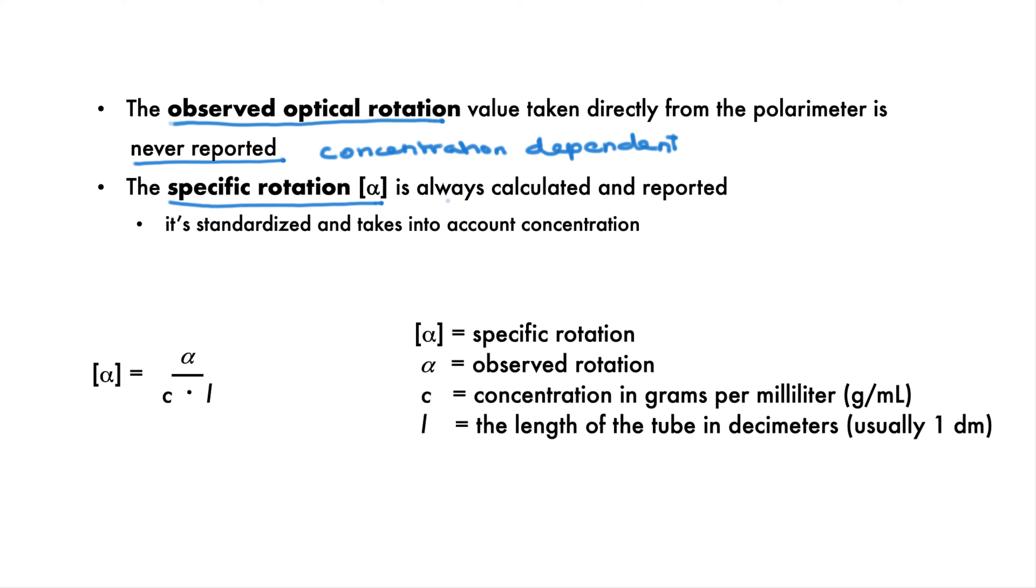Instead, we need to calculate a standardized value called the specific rotation. This is the value reported in scientific papers and reference tables. The symbol for this is an alpha in square brackets. We divide the observed rotation, that is the value obtained directly from the polarimeter, by the concentration in grams per milliliter, and also by the length of the sample tube in decimeters. Most sample tubes are one decimeter long.